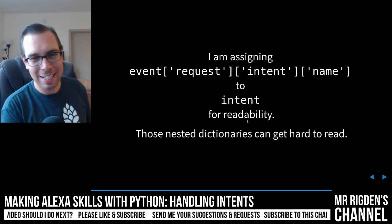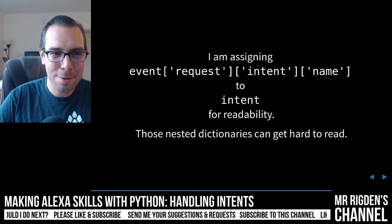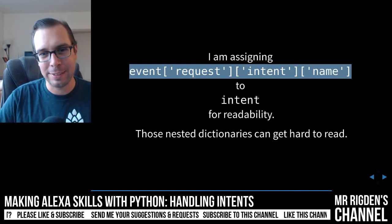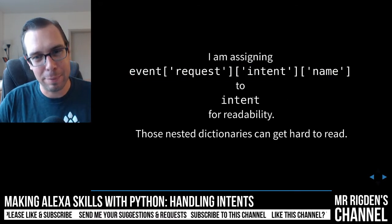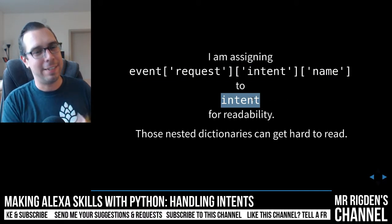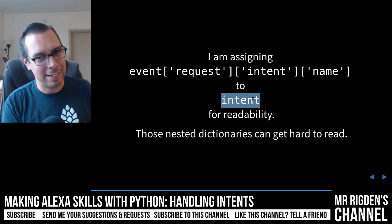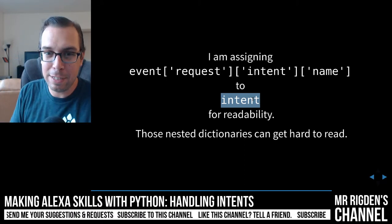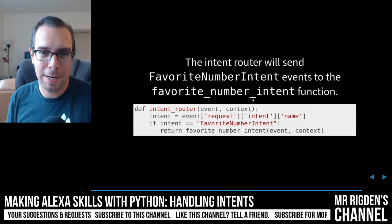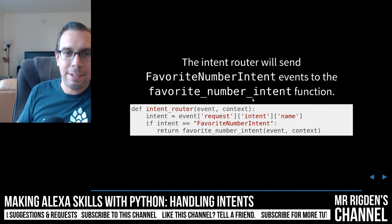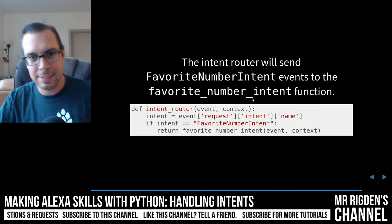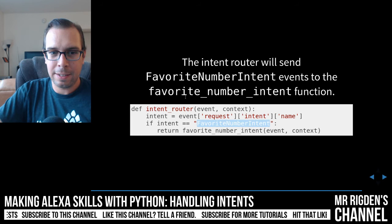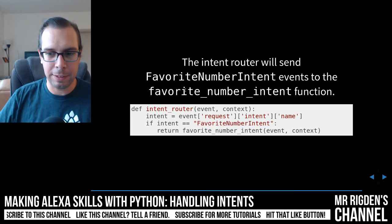So I'm assigning this huge long dictionary within a dictionary to the intent variable for readability. Nested dictionaries get hard to read, and one of the things we like about Python is that it's readable. The intent router is going to see that we received this favorite number intent, and then it's going to call the favorite number intent function.